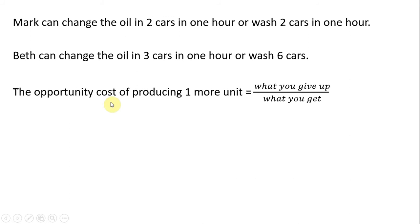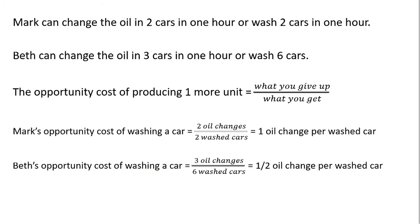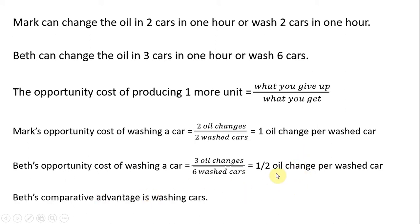Now let's look at it from the perspective of the other good. Mark's opportunity cost of washing a car: he would give up two oil changes and get two washed cars, which simplifies to one oil change per washed car. Beth's opportunity cost of washing a car: in an hour's time she would sacrifice three oil changes and get six washed cars, so she's only sacrificing half an oil change for every car washed. Lower numbers are better, so Beth's comparative advantage is in washing cars — she sacrifices fewer oil changes to wash a car than Mark does.